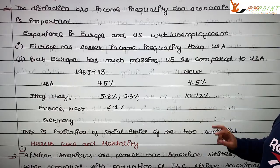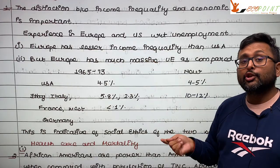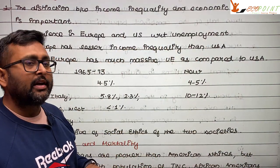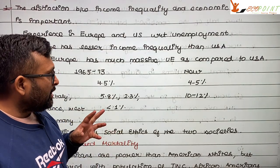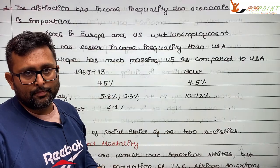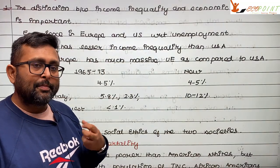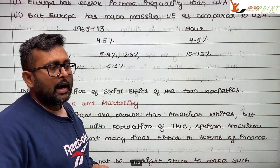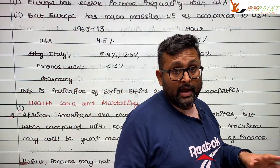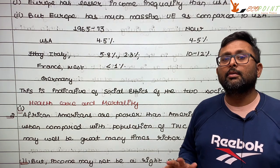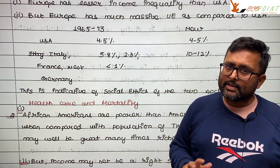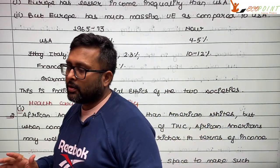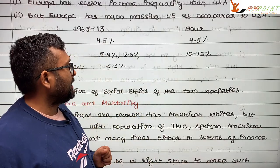Income inequality is lesser in Europe compared to the US, where income inequality is higher. But in the US, unemployment is lower compared to Europe. So in terms of deprivation, European society seems more tolerant of higher unemployment but cannot accept high income inequality, while US society accepts higher income inequality but not higher unemployment rates.